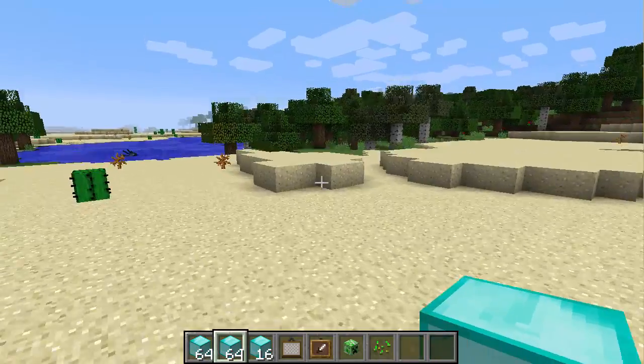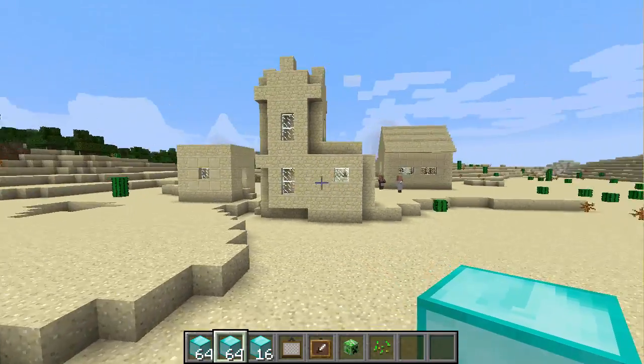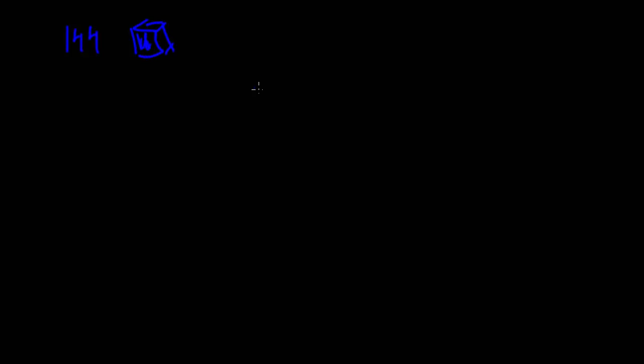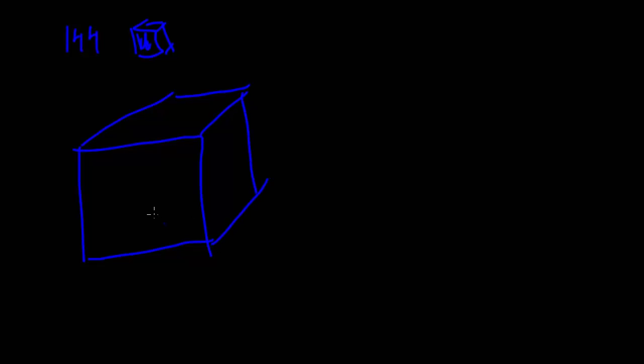Welcome to Wodermath. Today we're going to be using Minecraft to do a little bit of mathematics. We're going to start with assuming that we have 144 diamond blocks — it doesn't have to be diamond, it can be anything, and it doesn't have to be 144. I chose this number because it's a little bit easier to calculate. We're trying to build a rectangular house with no roof or anything like that, that has the highest possible volume on the inside.